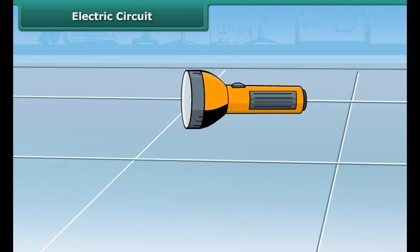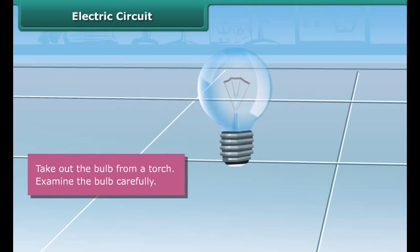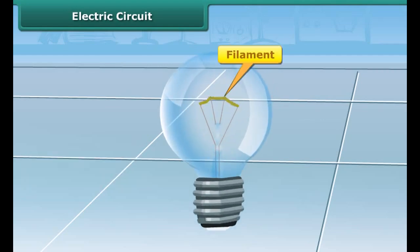Let us know how the bulb in a torch glows. Step 1: Take out the bulb from a torch. You can see that the bulb is a small globe of thin glass inside which a coiled filament is fixed on two thick wires.